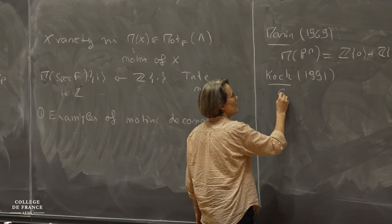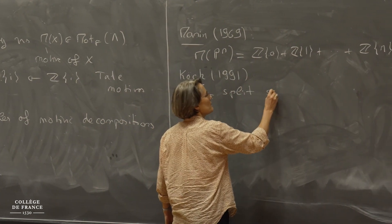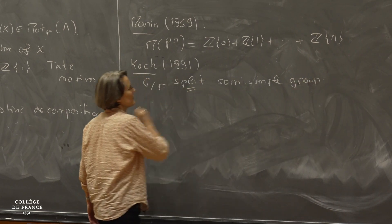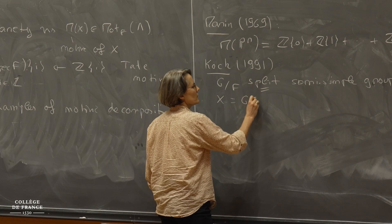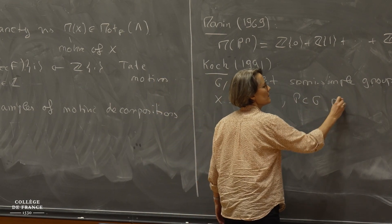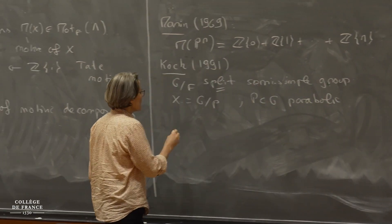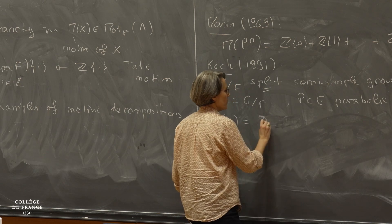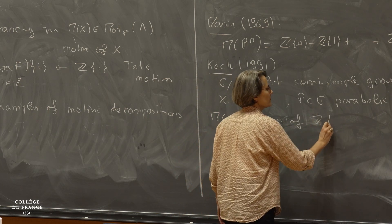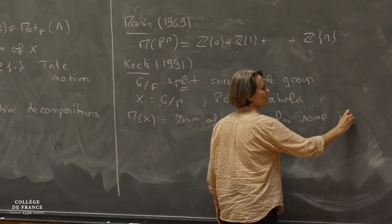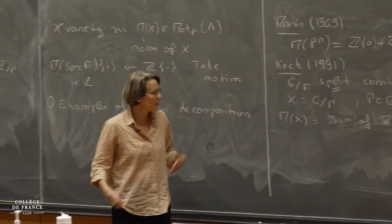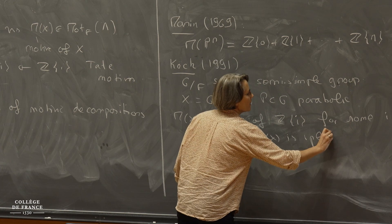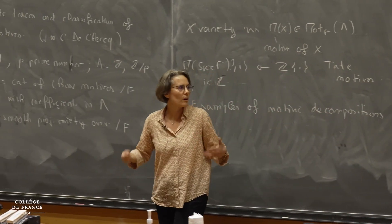What Köck proved is: if G over F is a split semisimple group, and X is a G-projective homogeneous variety for some parabolic P in G, then you can still write the motive of X as a sum of shifts, as a sum of lambda Z(i) for some i in Z. Such a motif is called split, or a pure Tate motif — it's a sum of shifts of the motive of a point.